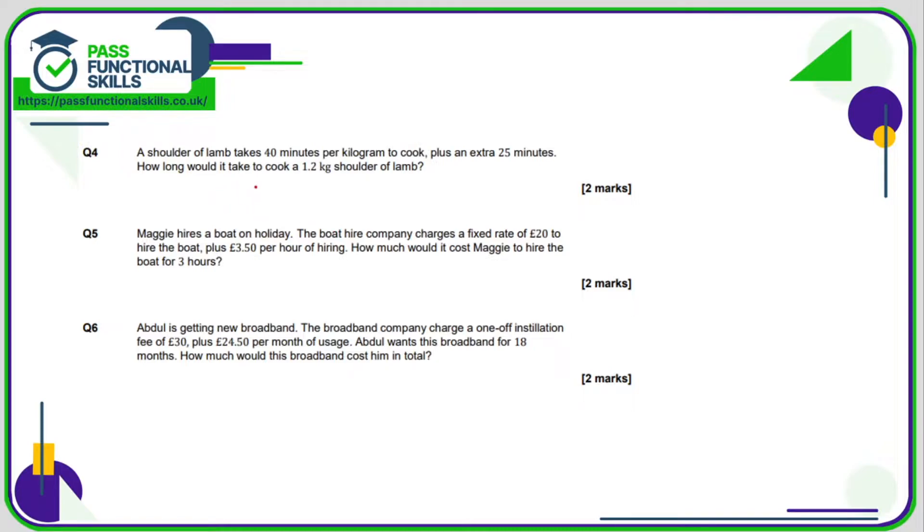Question number 4. A shoulder of lamb takes 40 minutes per kilo plus an extra 25. So we've got 1.2 kilos, so our calculation is going to be 40 multiplied by 1.2. And then we need to remember that on top of that we're going to add those extra 25 minutes. 40 multiplied by 1.2 is 48. So 48 plus 25 is 73, so 73 minutes.